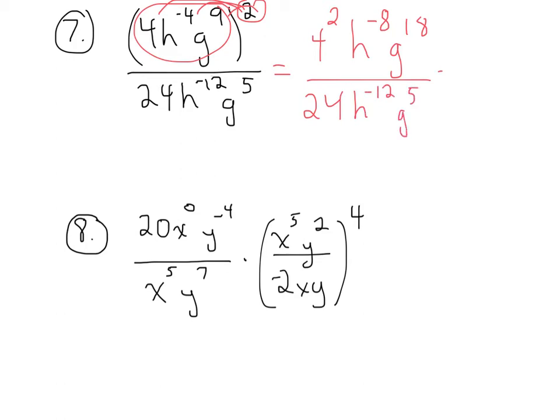And then, the next step I like to do is get rid of those negative exponents. So I'm going to leave it as 16, that's just 4 squared, becomes 16. And then I'm going to move this to the numerator, h to the 12th, g to the 18th.